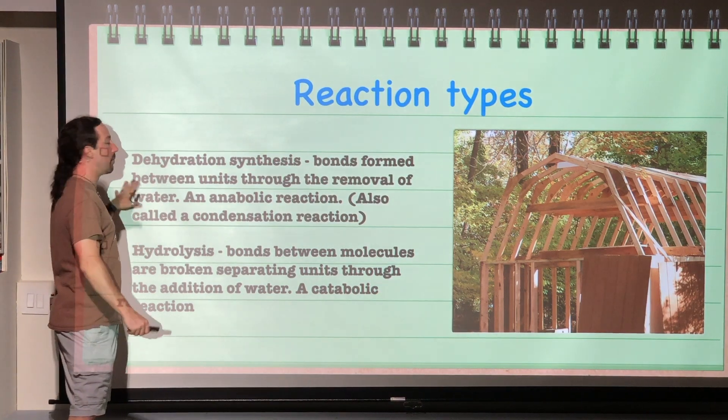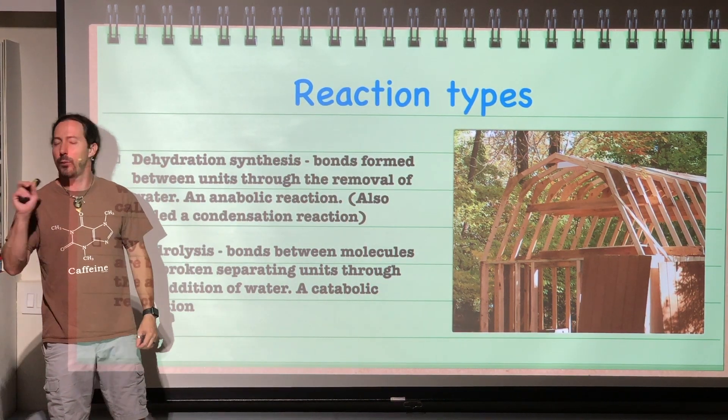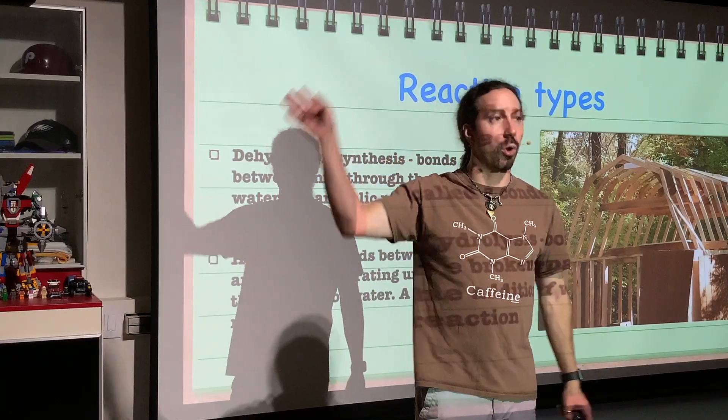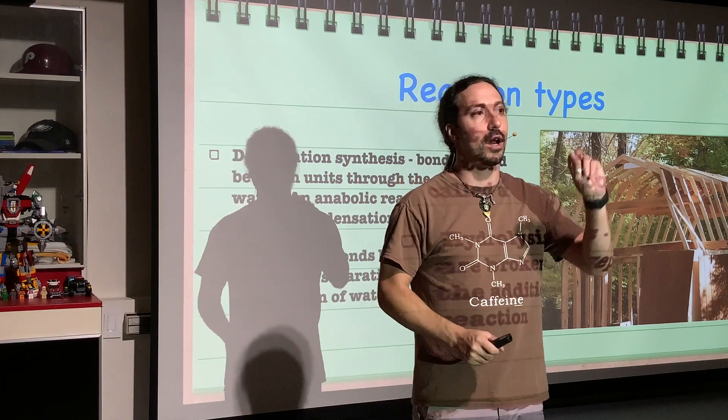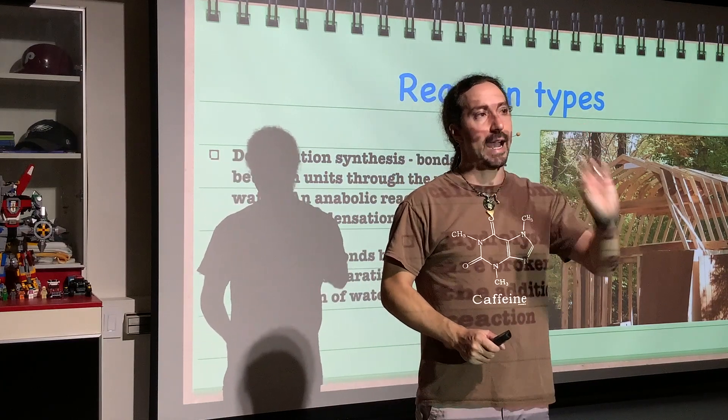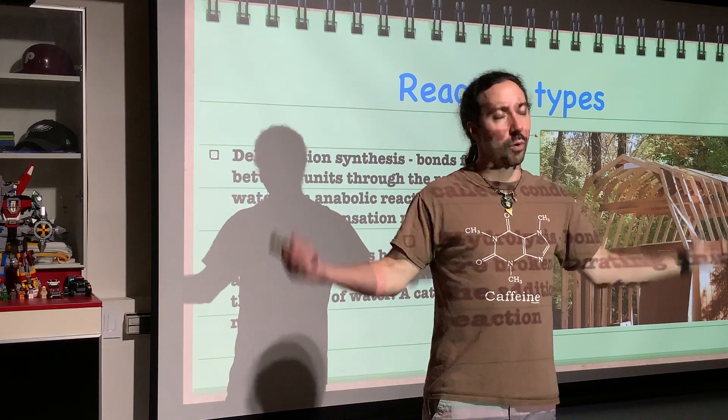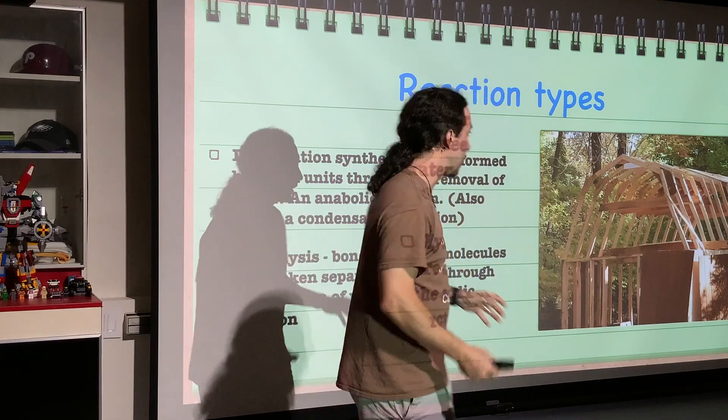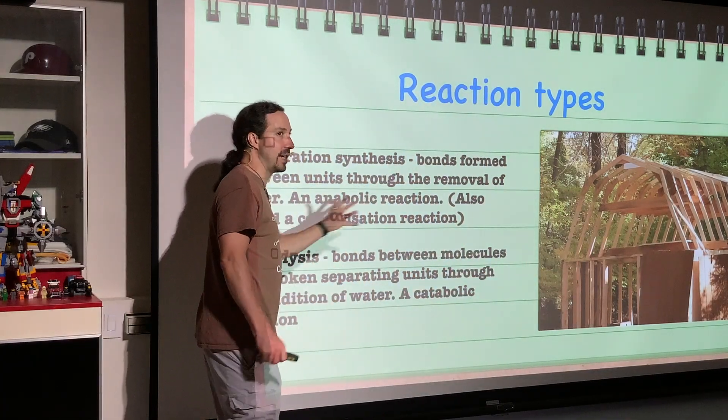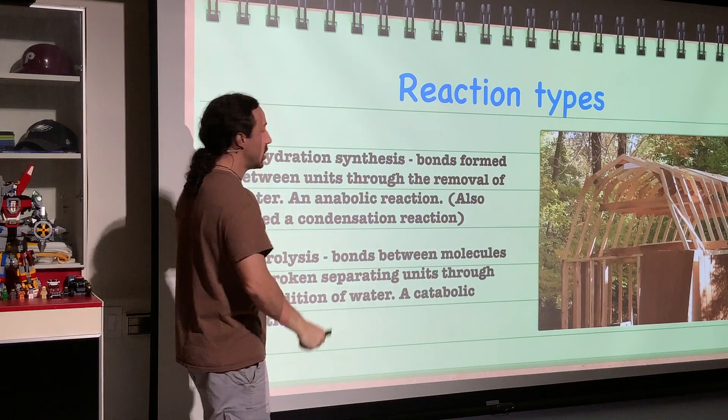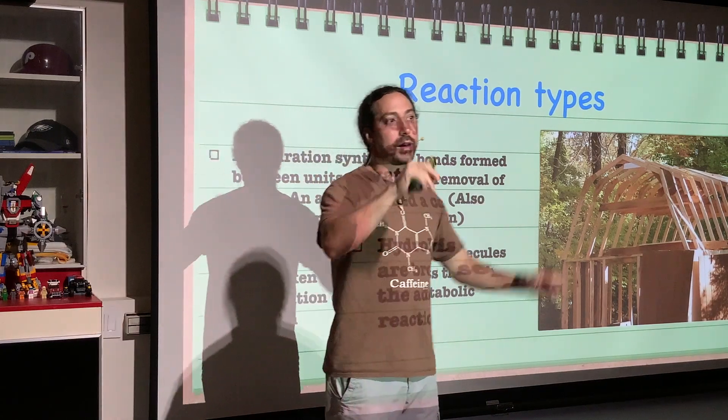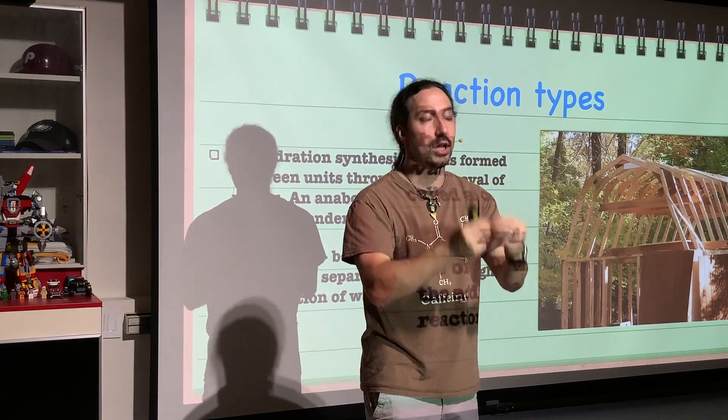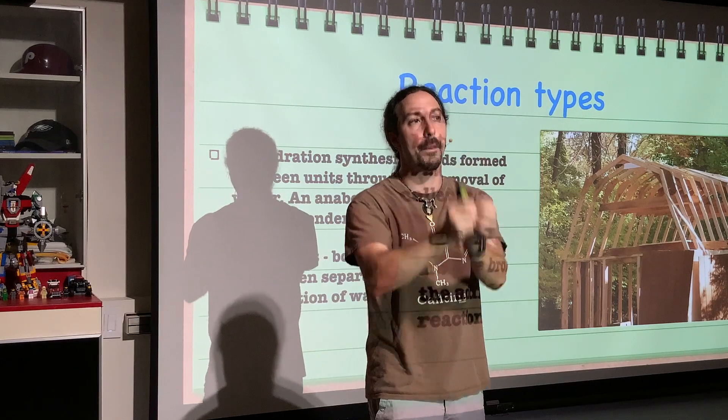It's going to be through the removal of water. So we are going to remove water. And when we say we remove water, we are not talking about like heating it up and evaporating the water away. What we are actually talking about is removal of specific atoms that make up water. So we are going to remove two hydrogens and one oxygen from these molecules. This is also called a condensation reaction. We are not removing water that exists there. We are going to remove the elements that make up water.